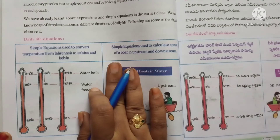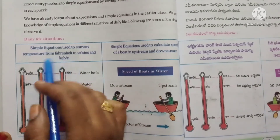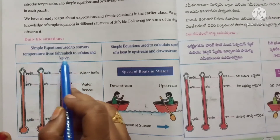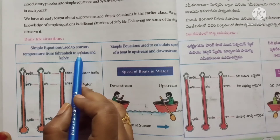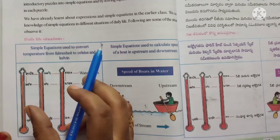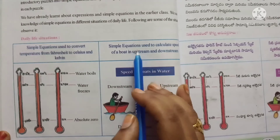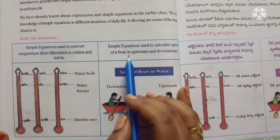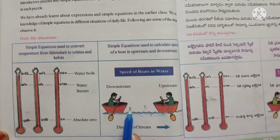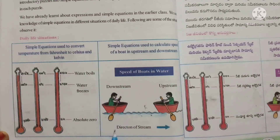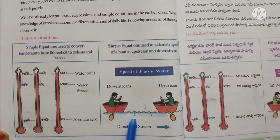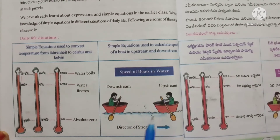Now let's see some daily life situations where we use simple equations. Simple equations are used to convert temperature from Fahrenheit to Celsius and Kelvin. They are also used to calculate the speed of a boat in upstream and downstream directions — downstream means moving in the direction of the stream, and upstream means moving in the opposite direction.